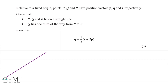In this question, relative to a fixed origin, the points P, Q and R have position vectors P, Q and R respectively. We're given two key pieces of information: P, Q and R lie on a straight line, and Q lies one third of the way from P to R. We're asked to show that the position vector Q is equal to one third of R plus two P.